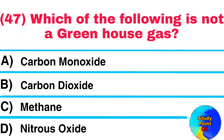Question No. 47. Which of the following is not a greenhouse gas? Answer: Carbon Monoxide.